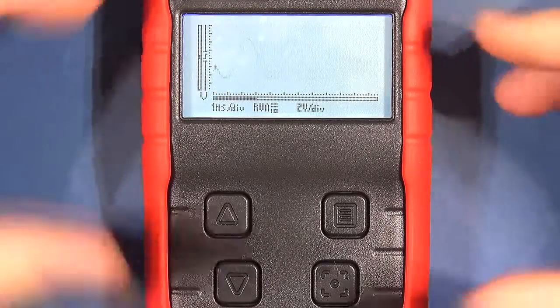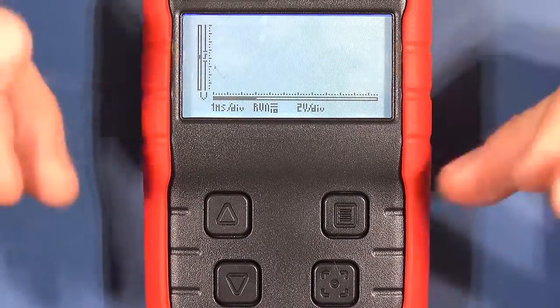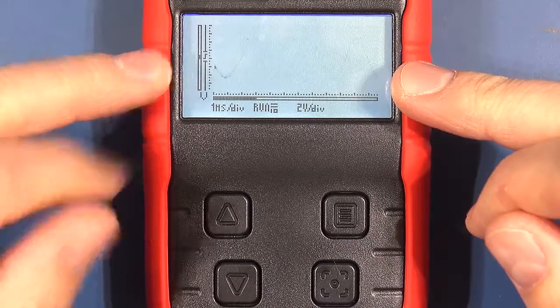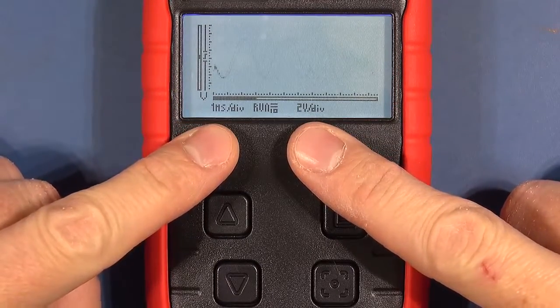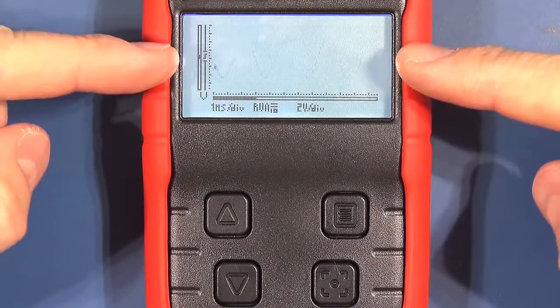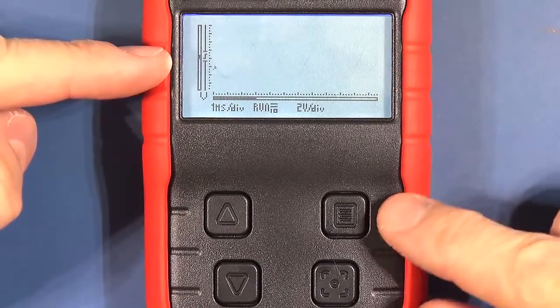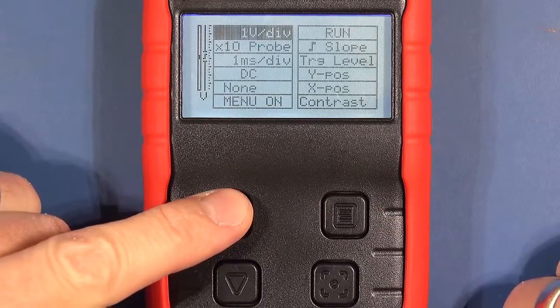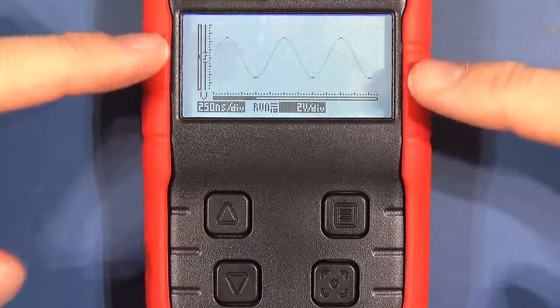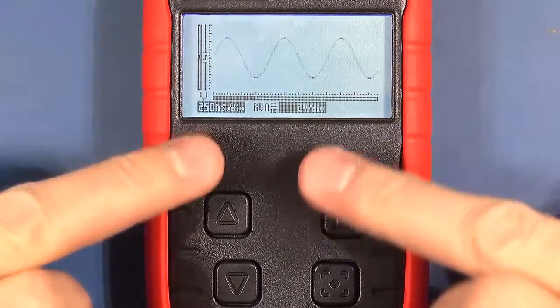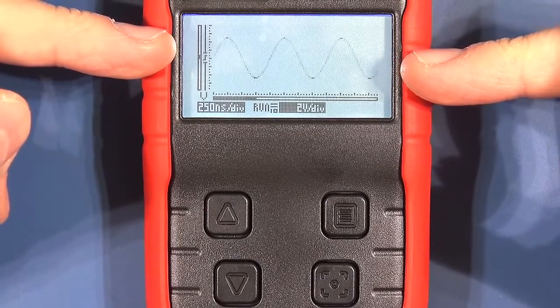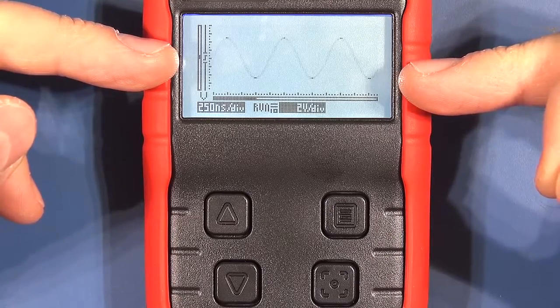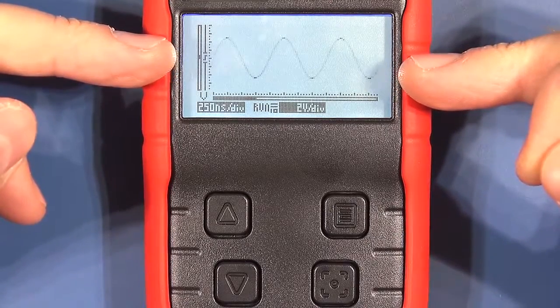Now we'll just have a look at the kind of limits of the bandwidth of the little scope and just demonstrate the kind of auto feature. Currently I've got the time base and volts per division set to manual. I've got a sinusoidal wave coming in at one megahertz. What I'm going to do is go to the menu system and change to auto. The scope then manages to settle on the automatic settings to display that signal correctly. What we're going to test now is we're going to step it up towards 10 megahertz which is what its quoted bandwidth input is and see how well it copes.